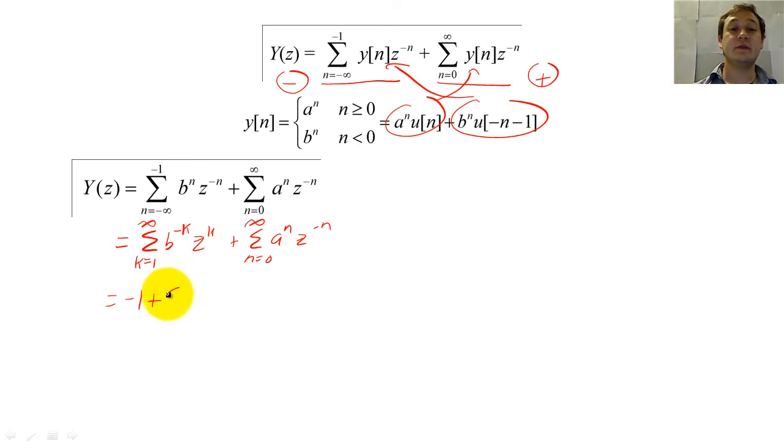Now we need to change the limits of the sum so that it goes from zero to infinity. Since B to the zero times Z to the zero equals one, we can add negative one outside the sum to change the limits of the Z-transform.